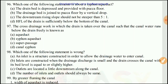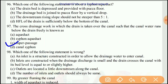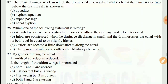Question 96: The cross drainage work in which the drain is taken over the canal such that the canal water runs below the drain freely is known as a super passage. The right answer would be C.